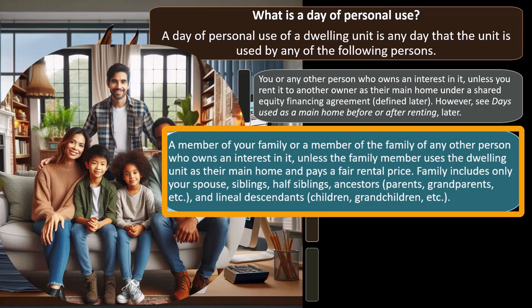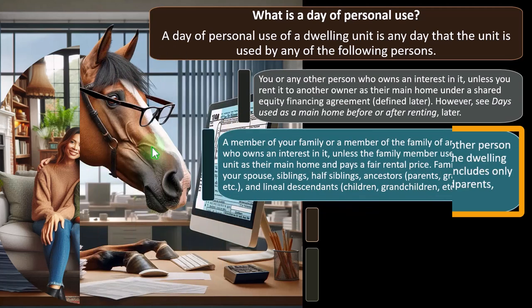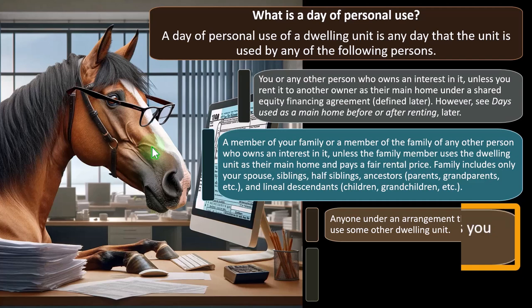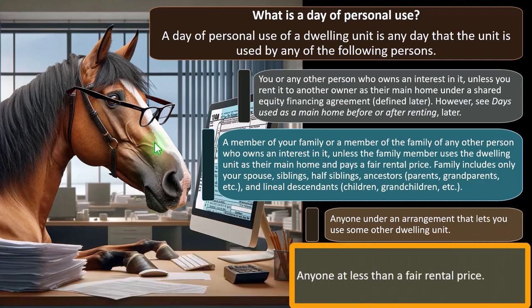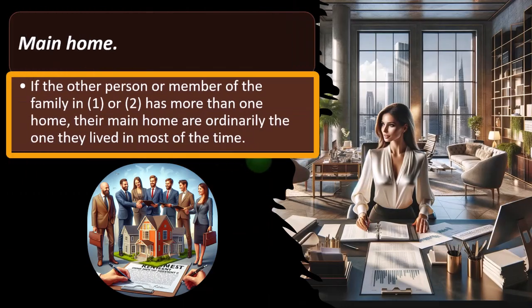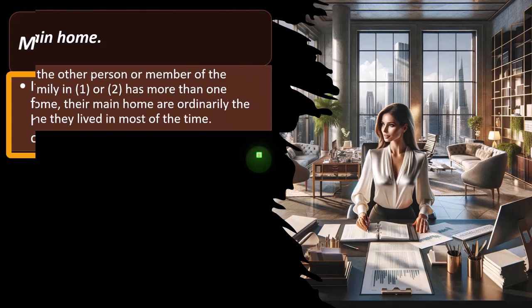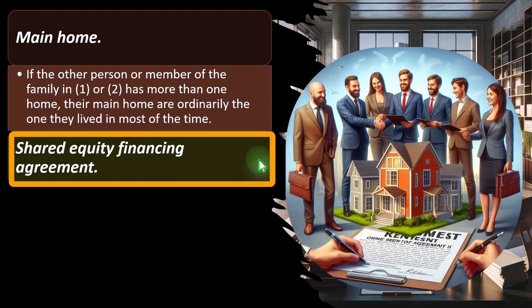Family includes only your spouse, siblings, half-siblings, ancestors (parents, grandparents, etc.), and lineal descendants (children, grandchildren, etc.). Personal use also includes use under an arrangement that lets you use some other dwelling unit (an exchange situation), or use by anyone at less than fair rental price — since renting at below-market price suggests it's more like personal property you're letting a friend use. If someone has more than one home, their main home is ordinarily the one they lived in most of the time.